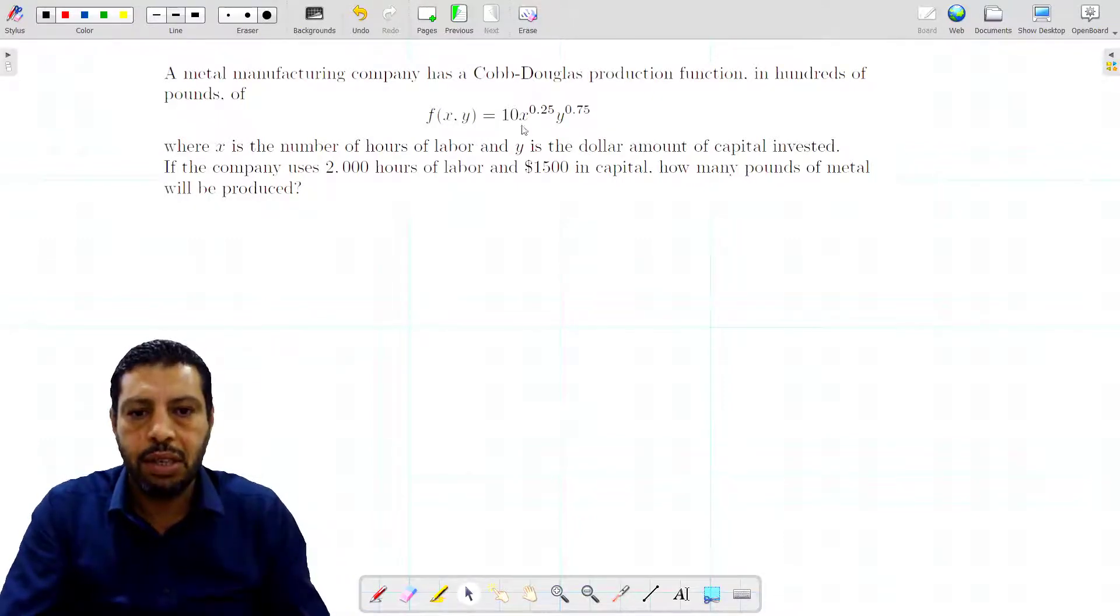To solve this, we just substitute x by the corresponding value of labor hours and y by the corresponding amount of capital. Nothing to do, just replace. To get this amount of metal produced, you just compute f of